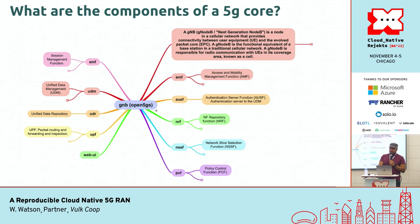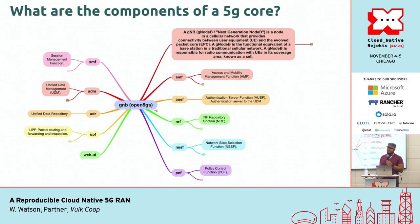What are the components of a 5G core? Get ready for lots of acronyms. You have the AMF, the SMF, the UPF, the NRF, the NSSF, the PCF, and the AUSF. These are all telecommunications acronyms. We're going to talk about some of these as we go forward. Some of them help with the interoperability of moving from 4G to 5G.